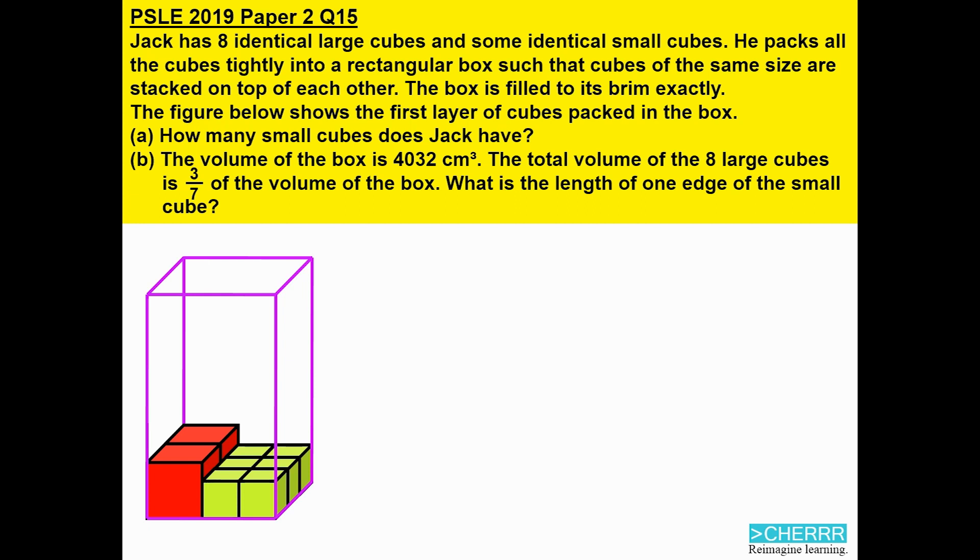We need to look at the diagram to compare the length of the large cubes and the small cubes. Notice that on the first layer, when the cubes are laid down flat, two large cubes and three small cubes are able to fit in on the same side. That tells us that we have a ratio of two to three.